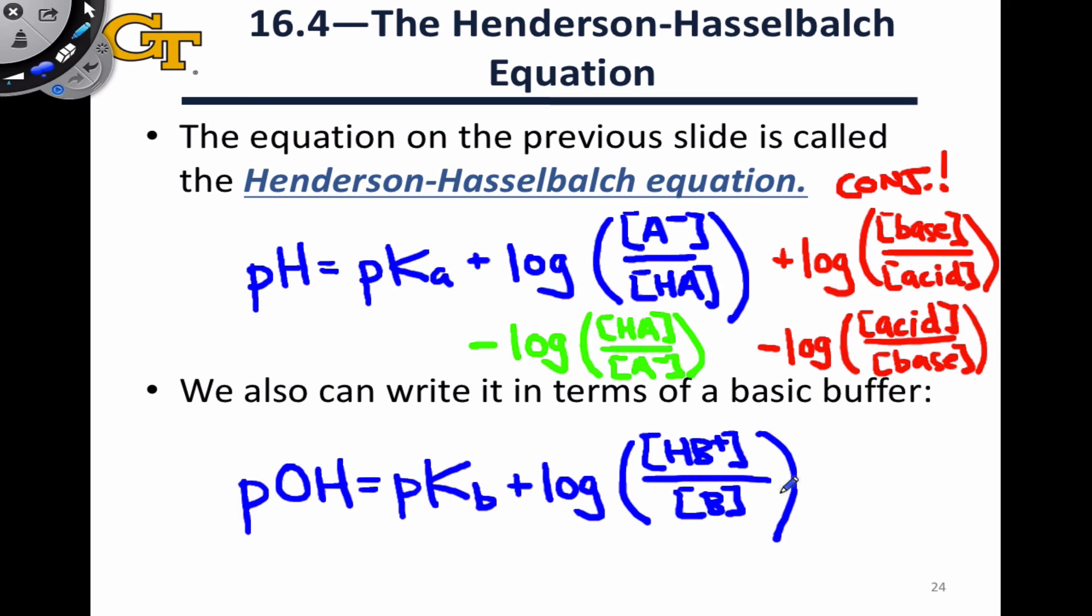Similar idea here, this equation is derived from the Kb expression rather than the Ka expression, but it has the same intuitive feel and ideas. As we increase the concentration of acid, the pOH goes up. That should make sense. The concentration of hydronium increases, the concentration of hydroxide decreases. As we increase the base concentration on the other hand, the pOH goes down and we have a higher concentration of hydroxide.